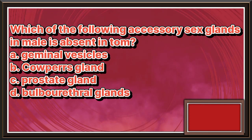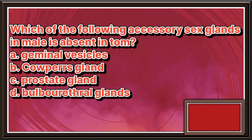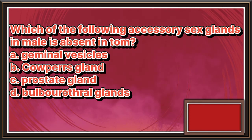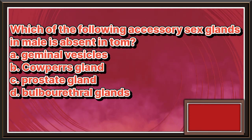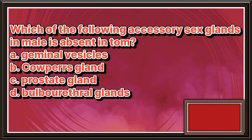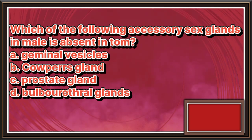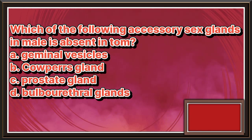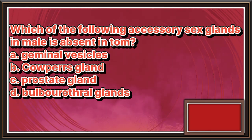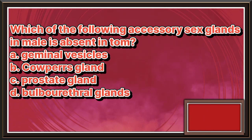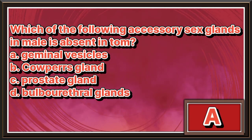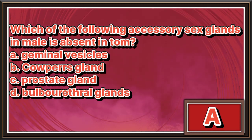Which of the following accessory sex glands in male is absent in a tom? a. Seminal vesicles. b. Cowper's gland. c. Prostate gland. d. Bulbourethral glands. The answer is letter a.